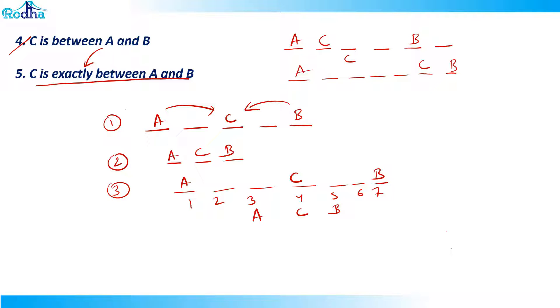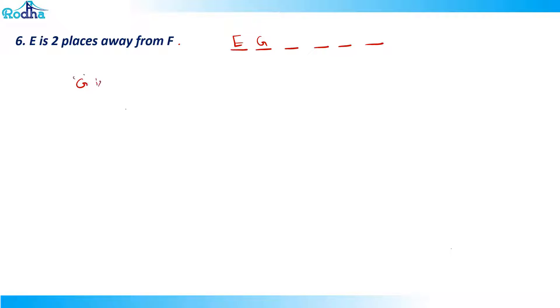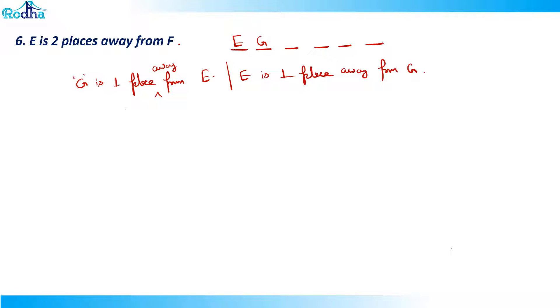Now, 'E is two places away from F.' This is also a common misconception among students. If I mark positions one, two, three, four, five, six — if I say E is two places away from F, and I put G next to E, then G is one place away from E, and vice versa. E is one place away from G. Similarly, if F is two places away from E, and E is here, then I place F two positions over — F is two places away from E.